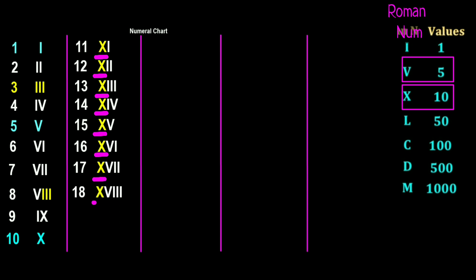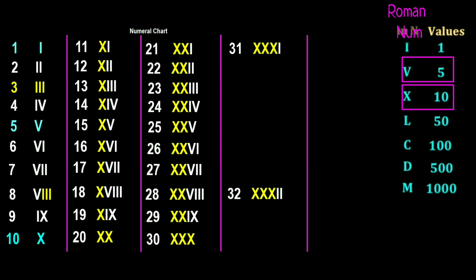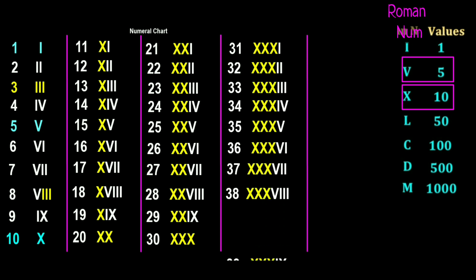For eighteen XVIII, for nineteen XIX, for twenty XX. Let's repeat the same from twenty-one to thirty-nine. For thirty-nine we have XXXIX.